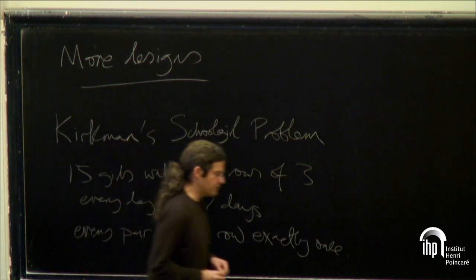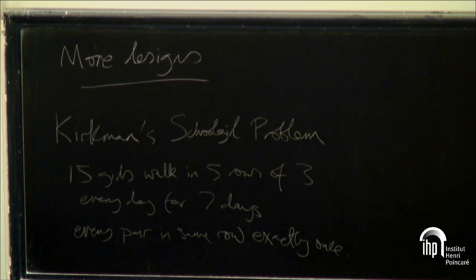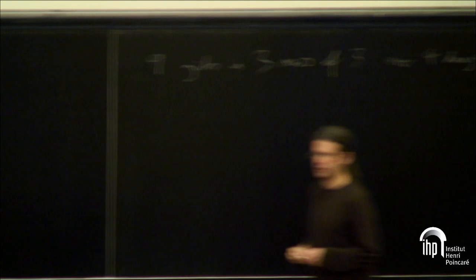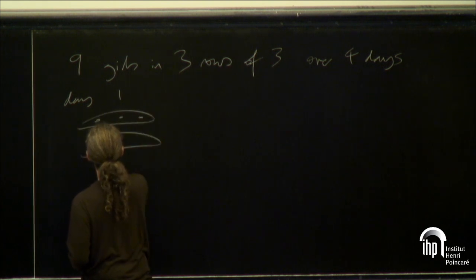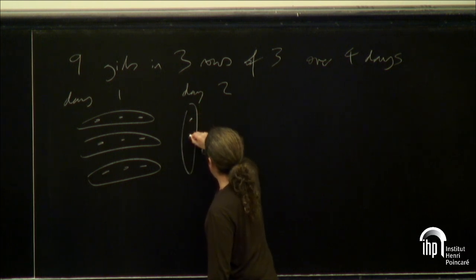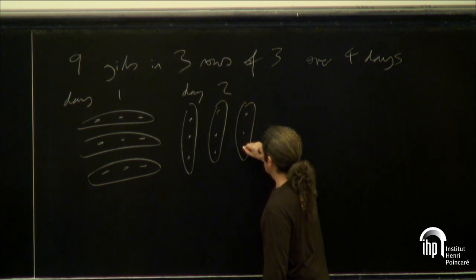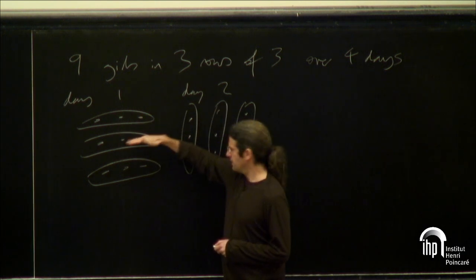This was solved — I think Kirkman had a solution himself. To illustrate this, I'll simplify it by using smaller numbers: nine girls in three rows of three, so I'll be looking to have four days. I can easily draw a picture of the solution. On the first day, I have rows like this. Then on the second day, I'll draw them horizontally first and then vertically. The positions of the girls are represented by dots, which are fixed. I've covered all horizontal pairs, then all vertical pairs.